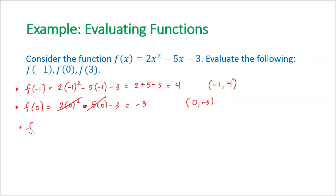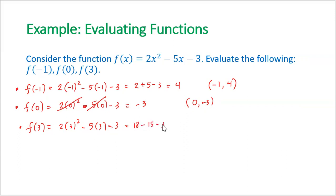For f(3): substituting 3 gives 2(3²) minus 5(3) minus 3. Since 3² is 9, that's 2 times 9 equals 18, and negative 5 times 3 is negative 15. So we have 18 minus 15 minus 3, which equals 0. Therefore the point (3, 0) is on the graph of 2x² minus 5x minus 3.